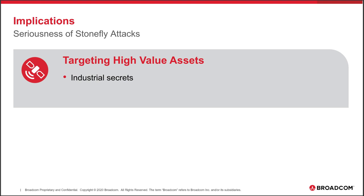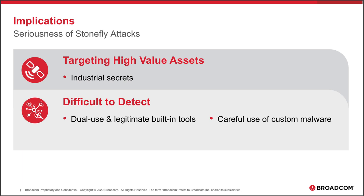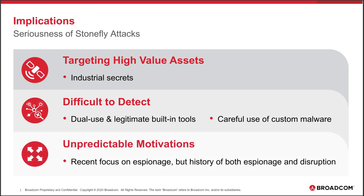What are the implications of a Stonefly attack? There are really three. First and foremost, they're targeting very high-value assets — advanced research, industrial secrets, intellectual property that is really key to these organizations. Second, they're relatively difficult to detect because they don't rely on custom malware; instead they use a lot of dual-use and legitimate built-in tools. And finally, their motivations are unpredictable — although they appear to be a pure-play espionage group at the moment, we know they've carried out both espionage and disruption concurrently, so we can't rule out a disruptive attack in the future.